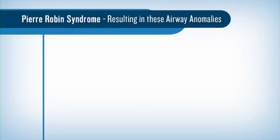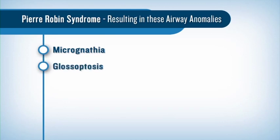In Pierre-Robin syndrome, the classic triad of airway anomalies include micrognathia, glossoptosis, and cleft soft palate.